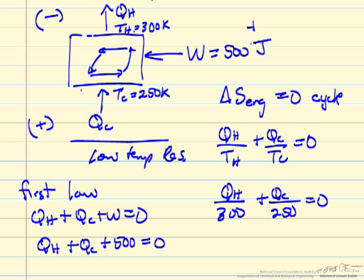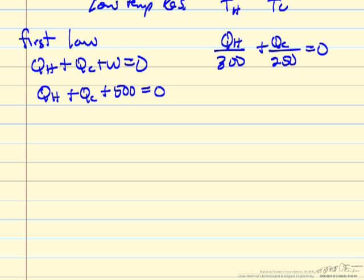W is positive, we're adding energy to the system. So I can write QH is equal to minus QC plus 500. So I can substitute that back into here.